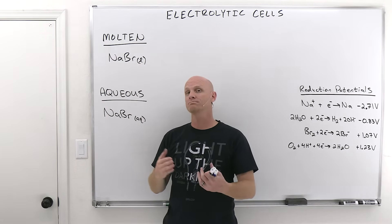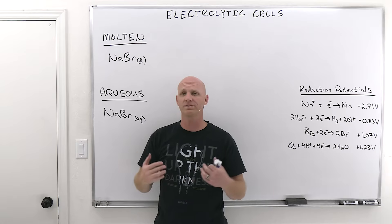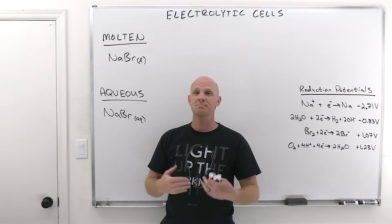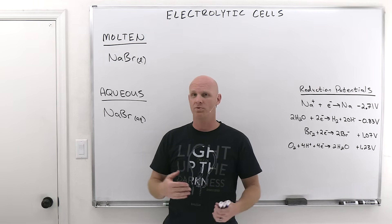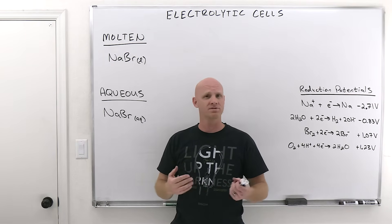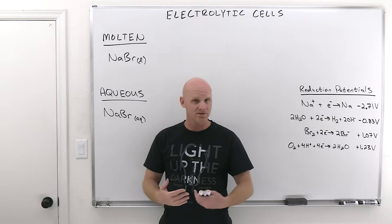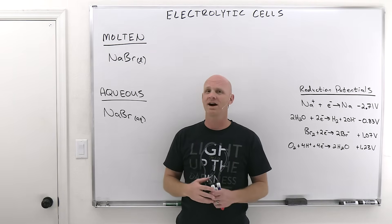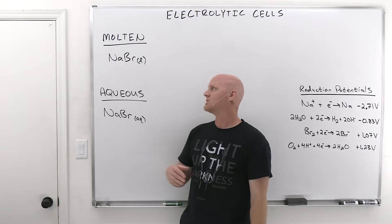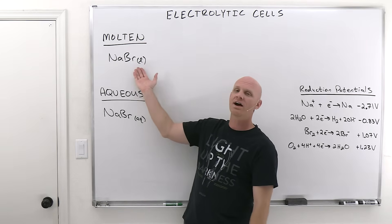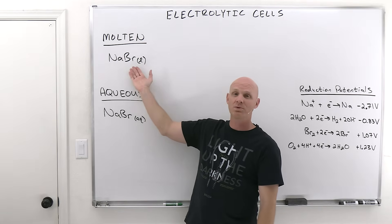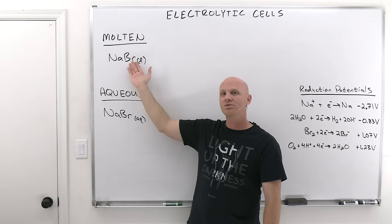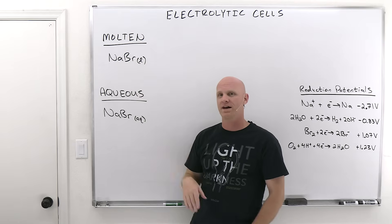The other time you hear the word 'molten' is molten lava — molten lava is just melted rock, and rocks are often composed of a fair amount of ionic compounds. That's why it takes pretty high temperatures to melt rock. Same thing here: melting ionic compounds generally requires super high temperatures, and when you melt it, you've got a molten salt.